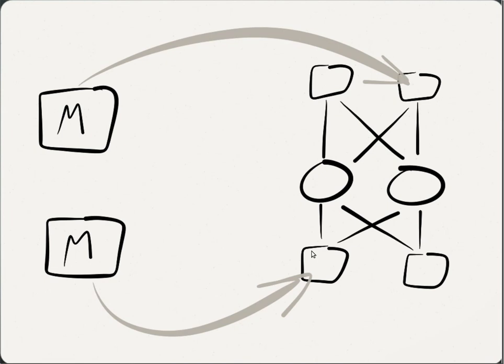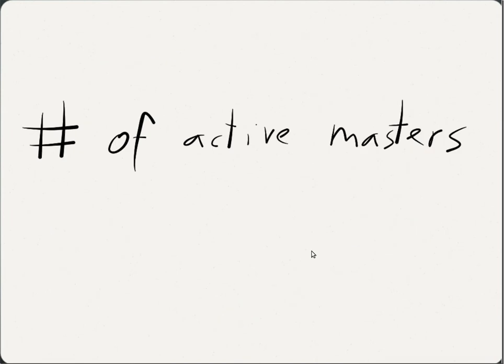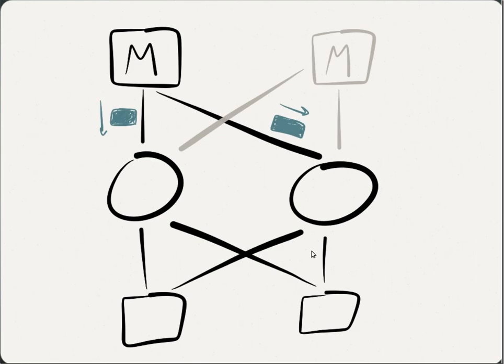Similarly, master replication also depends on the number of active masters. For instance, we could have only one active master, with the others acting as spares, or we could have multiple active masters. In this latter case, it is necessary for the masters to agree on the messages they transmit.